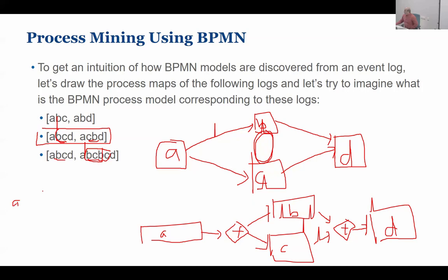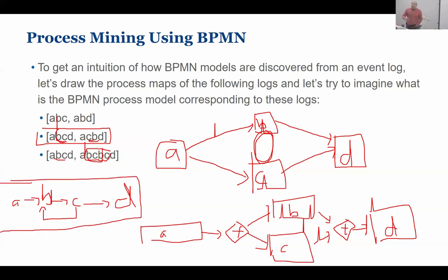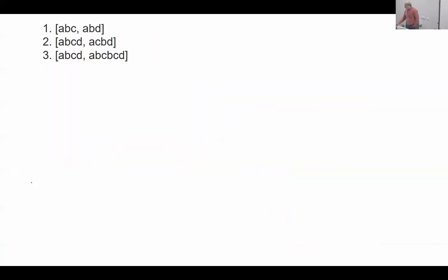For a repetition pattern, they will put A, then B, then C, then D. From A you go to B, from B you go to C, from C you can come back to B — there is a repetition — and from C they go to D. These algorithms take these patterns and turn them into a nice-looking BPMN model.